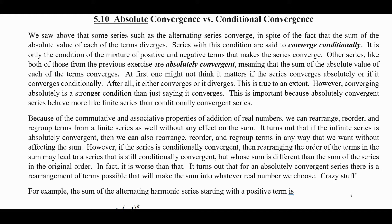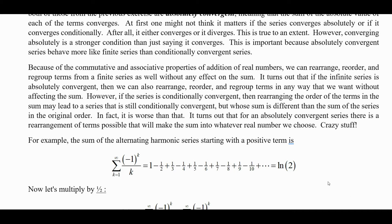So, for example, the sum of the alternating harmonic series starting with the positive term — 1 minus 1/2 plus 1/3 minus 1/4 and so forth — the sum from k equals 1 to infinity of negative 1 to the k over k, turns out to be the natural logarithm of 2. We'll show that later on.